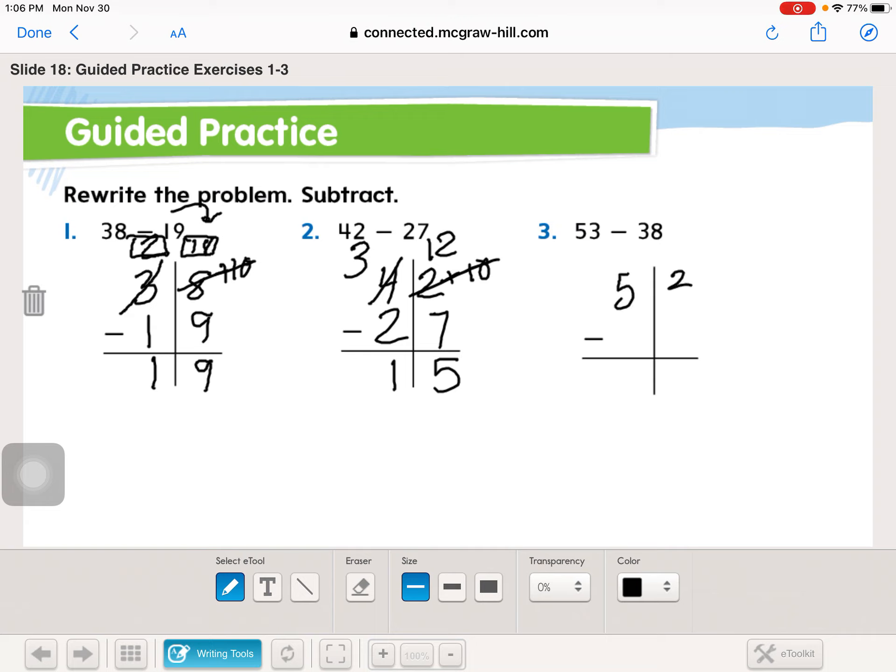All right, let's do one more together. 53 minus 38. You can draw your boxes if you'd like. If not, you can just write above. More on the top, more on the floor. We have more on the floor. Go next door. Take a ten. Break a ten. 13 minus 8 is 5. 4 minus 3 is 1.